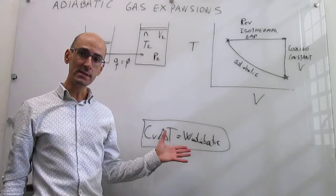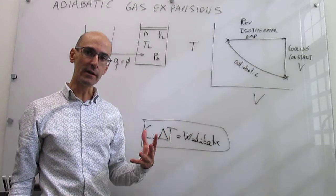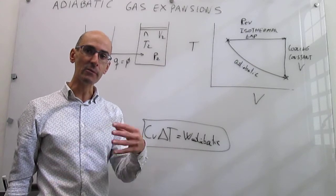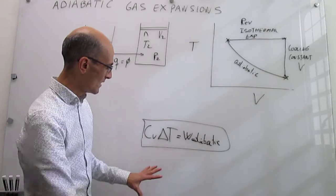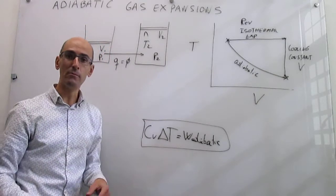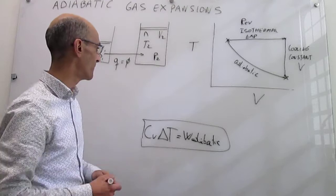So what we're going to do is use this expression to see if we can find a useful relationship between the initial temperature and volume and final temperature and volume. The first thing that we do is take that equation and write it in differential form.